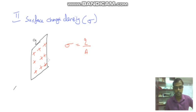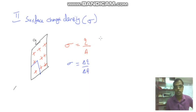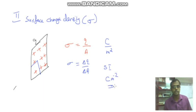You can see there is a plane area. If you take a very small portion from this small area, we write sigma is equal to delta Q divided by delta A. The SI unit is Coulomb per meter square. The charges are distributed on a surface, so it is called surface charge density.